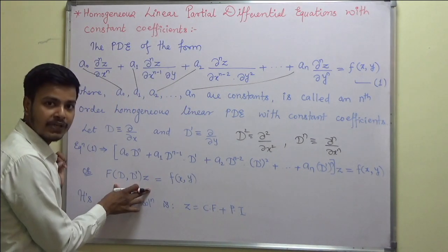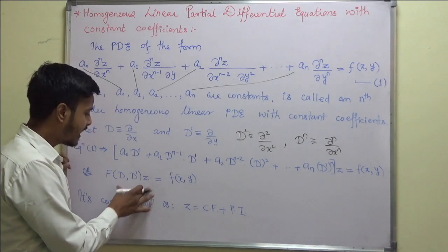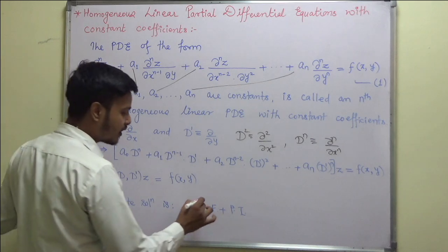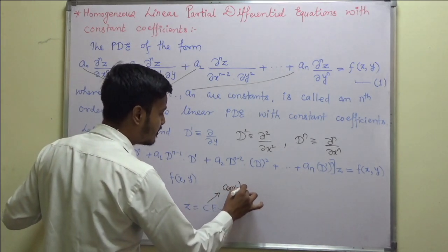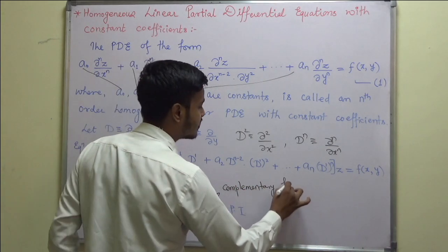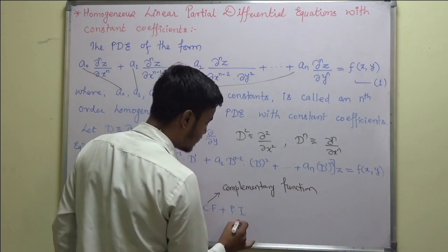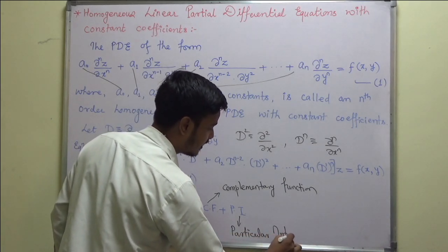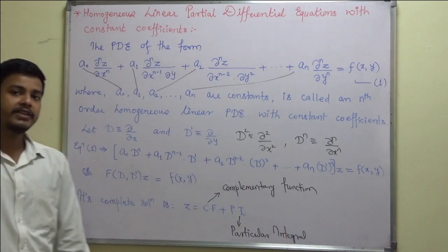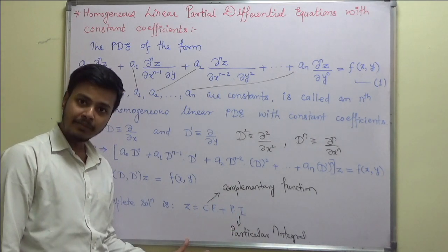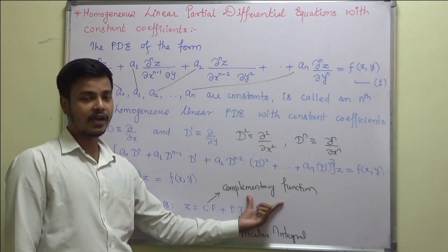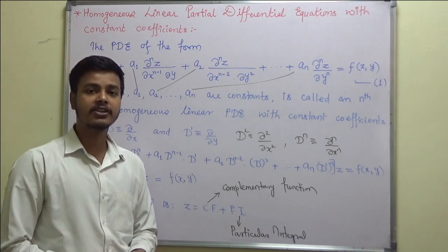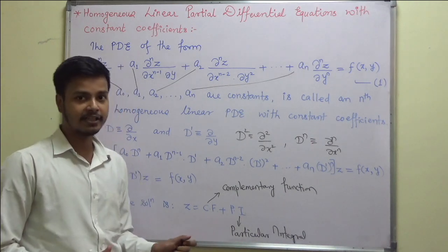For this type of equation, the solution is given by z equals CF plus PI. CF stands for complementary function, and PI stands for particular integral. Everything depends on the problem — sometimes you have to find only the complementary function, sometimes only the particular integral, and sometimes both.